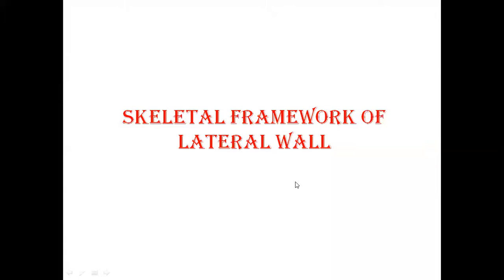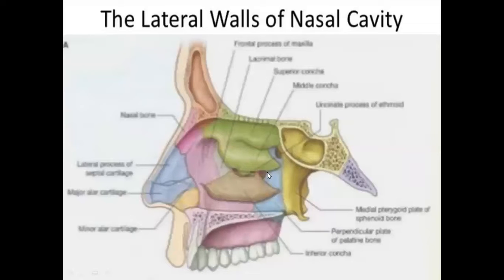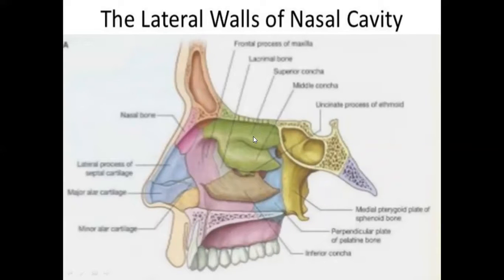Next is the skeletal framework of the lateral wall. The lateral wall is partly bony, partly cartilaginous, and partly cuticular. The bony part is formed by the following bones from before backwards: the nasal bone, frontal process of maxilla, lacrimal bone, inferior nasal concha which is an independent bone, middle nasal concha, and superior nasal concha — which are projections from the medial surface of the labyrinthine part of the ethmoid bone — the perpendicular plate of the palatine bone, and the medial pterygoid plate of the sphenoid bone.